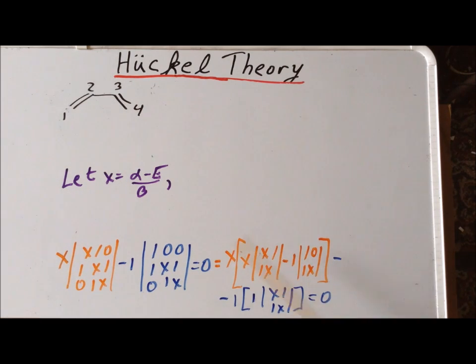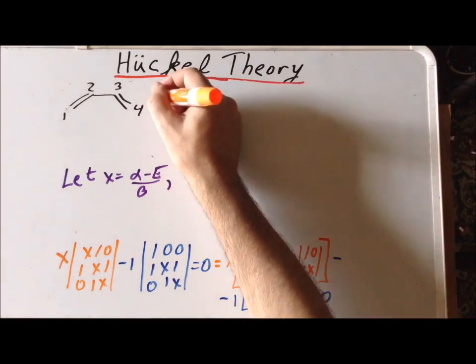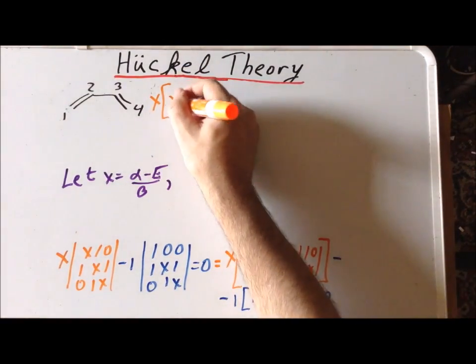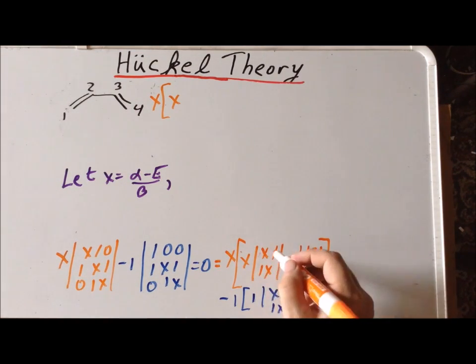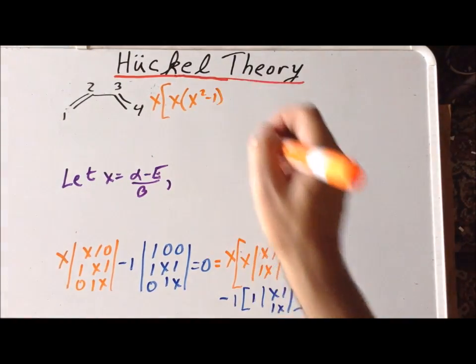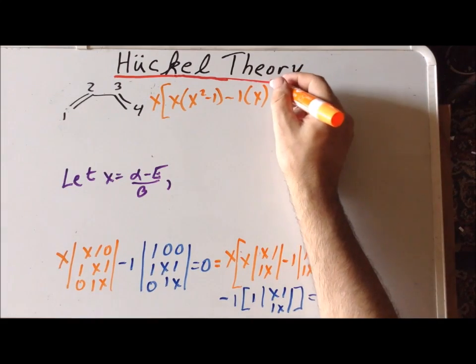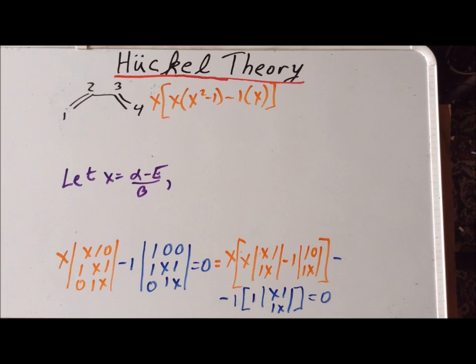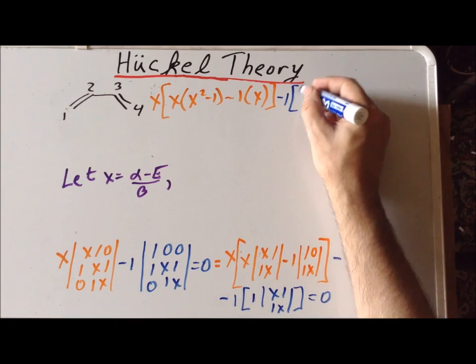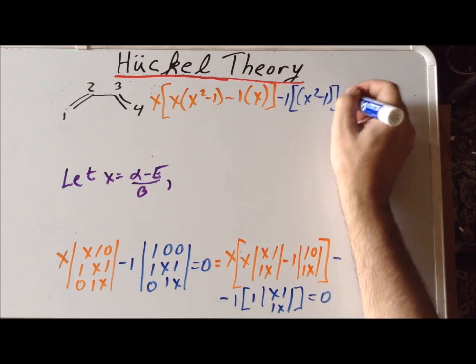Now that we have reduced our determinants down to two by two determinants, we can use the definition of the determinant for a two by two case to immediately evaluate these expressions. So, we get this particular two by two determinant as x times x minus 1 times 1. So, that is x squared minus 1. For this particular two by two determinant, we have 1 times x, which is x minus 1 times 0. So, this reduces simply to x. For the blue expression here, we have minus 1 in the front. And x times x minus 1 times 1 is, again, just x squared minus 1. And this is all equal to zero.